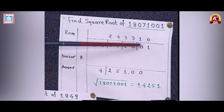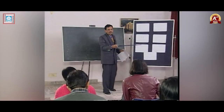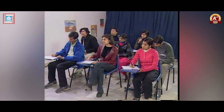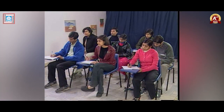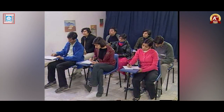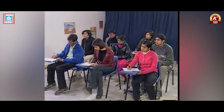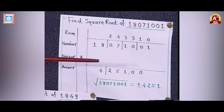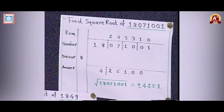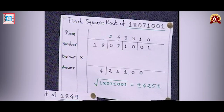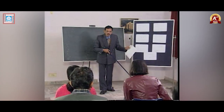Then 10 minus D(2,5,1,0) equals 10 minus 10 equals 0. 0 divided by 8: quotient 0, remainder 0. Then next dividend 01 minus D(2,5,1,0,0) equals 1 minus 1 equals 0. 0 divided by 8: quotient 0, remainder 0. We discontinue because all digits are exhausted. With 4 groups, place the decimal after 4 digits. The answer line shows: 4, 2, 5, 1, 0, 0. So the square root of 18071001 equals 4251.